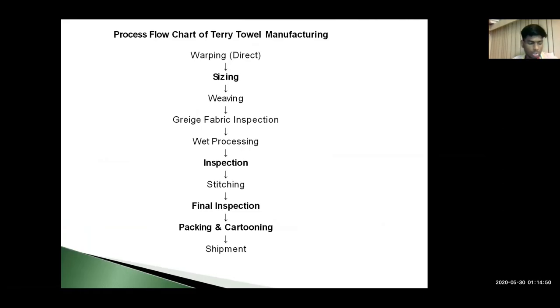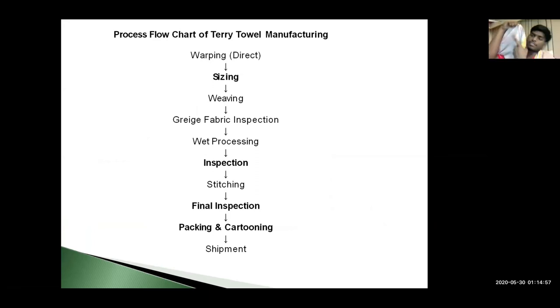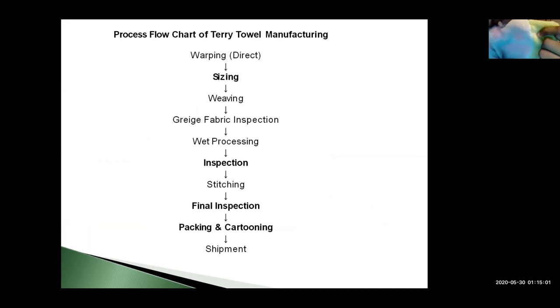Now I will talk about the process and the flowchart of Terry Towel manufacturing. First we have warping. Warping is nothing but the bending of the thread. The thread gets bent on the other thread — this is the warping.